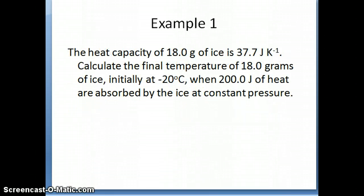Let's work through this example really quickly. It says the heat capacity of 18 grams of ice is 37.7 joules per kelvin. Calculate the final temperature of 18 grams of ice initially at minus 20 degrees when 200 joules of heat are absorbed by the ice. So you have this ice, it's 18 grams, you heat it up with 200 joules of energy and it goes in as heat and you want to know what is the final temperature.